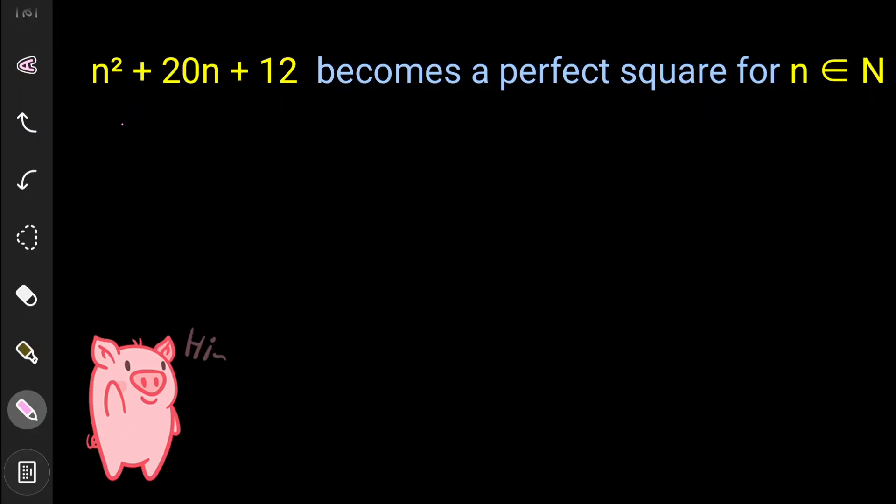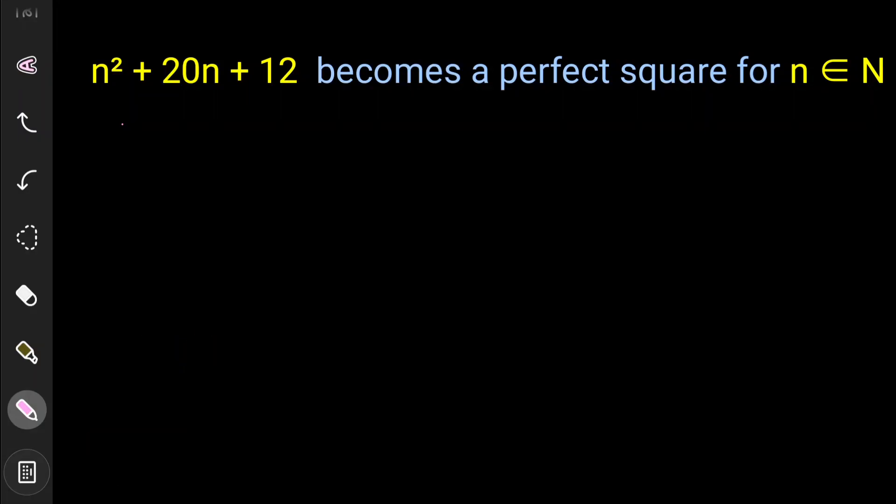Today we have a nice number theory problem. We have an equation n² + 20n + 12, and the question is to find the value of n for which this equation becomes a perfect square, for all natural values of n — that is, n is a positive integer.